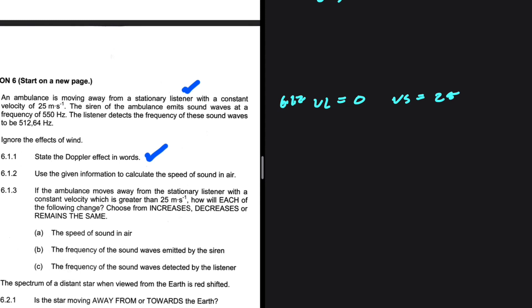The siren of the ambulance emits sound waves at a frequency of 550 hertz. So we have the frequency as emitted by the source being 550 hertz. The listener detects the frequency of these sound waves should be 512.64 hertz. So the frequency as observed by the listener is 512.64 hertz.